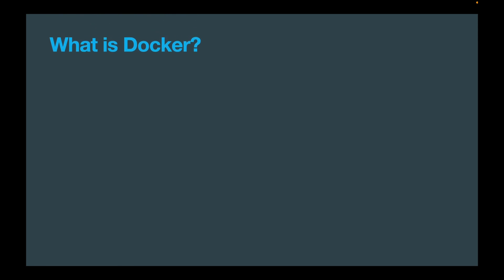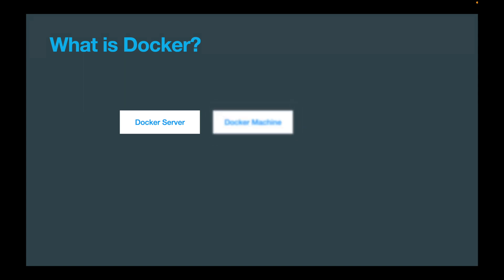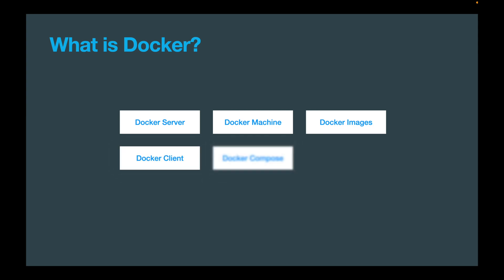When someone says they've used Docker, they might be referring to various services Docker provides. Docker is not just a single service — it's a collection of multiple services called the Docker ecosystem. These include: Docker Server, Docker Machine, Docker Images, Docker Client, Docker Compose, and Docker Hub. All six of these make up the Docker ecosystem.